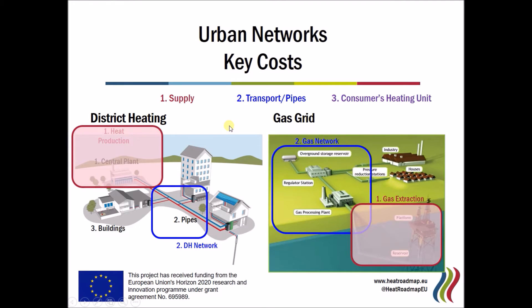The second key component is the transport of heat or fuel to the final consumer via a piping network. In almost all cases for both options, it's a piping infrastructure. In the district heating scenario, it's the transfer of hot water from the central plant to the building, and the return of cold water back to the plant to be reheated. In contrast, the gas piping network is not bidirectional but only unidirectional, because the gas only goes in one direction from the gas reservoir to the final user.